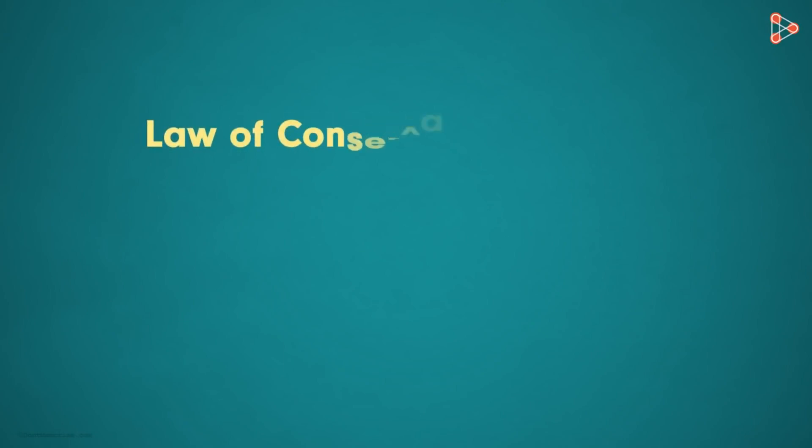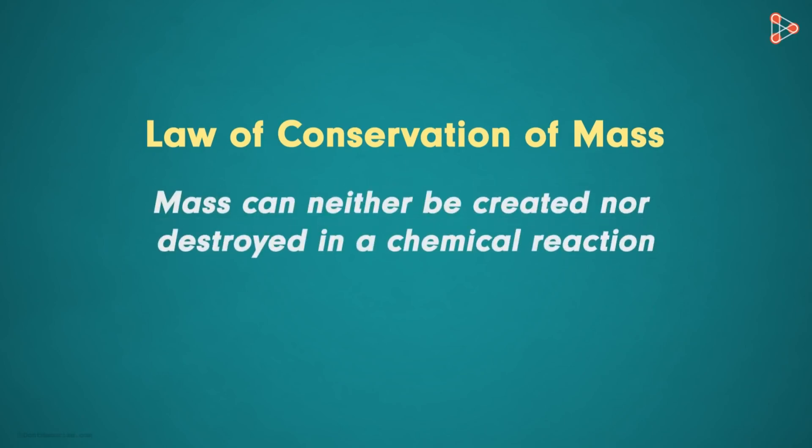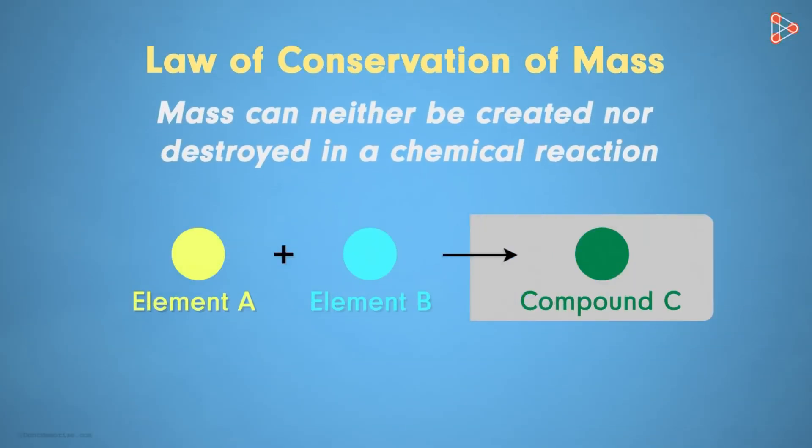Antoine Lavoisier put forth the law of conservation of mass. It states that mass can neither be created nor destroyed in a chemical reaction. He explained this law by saying that matter is formed from pre-existing matter, and the mass of the newly formed matter will be the same as that of the pre-existing matter.